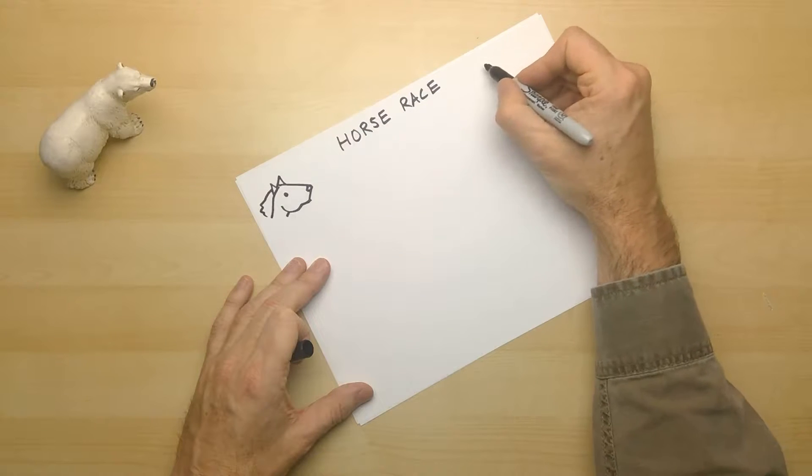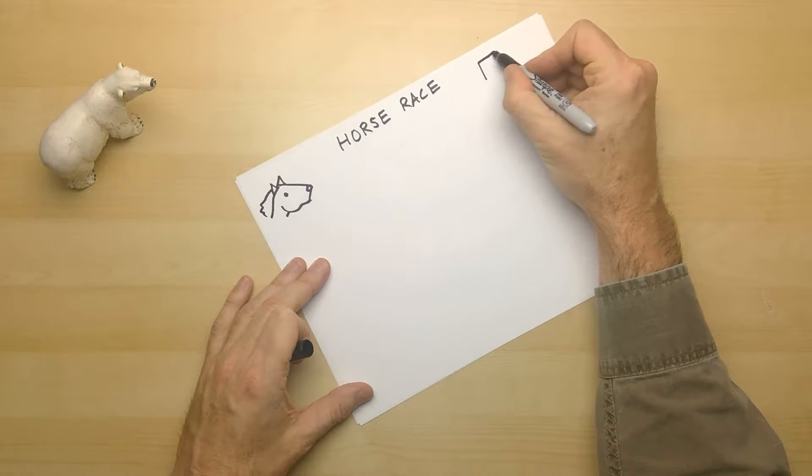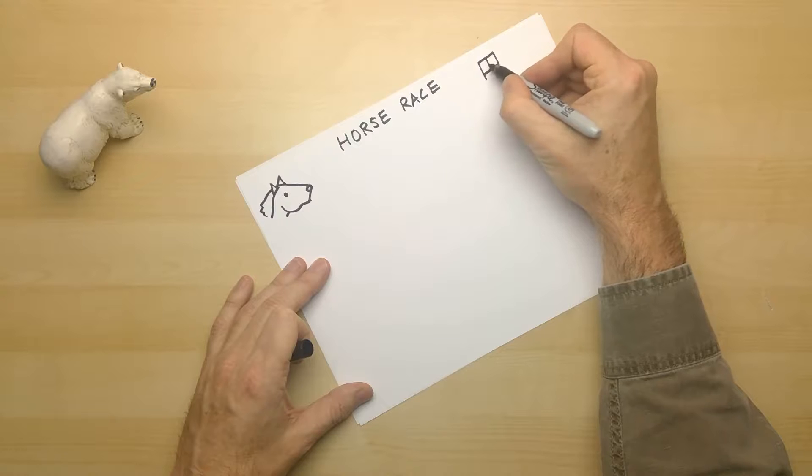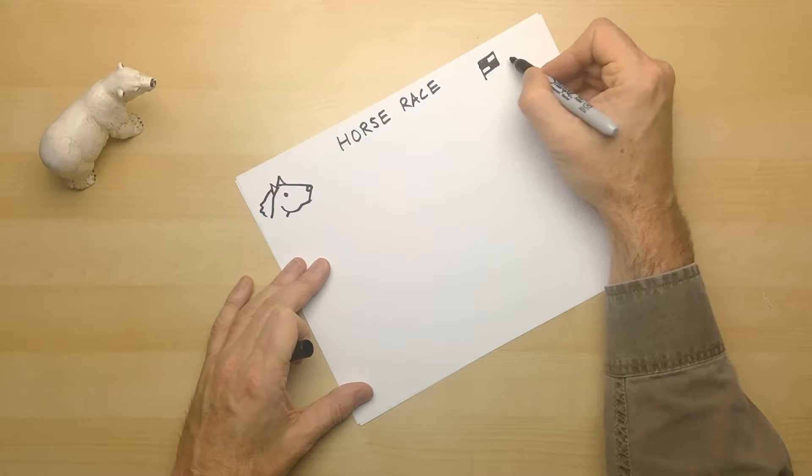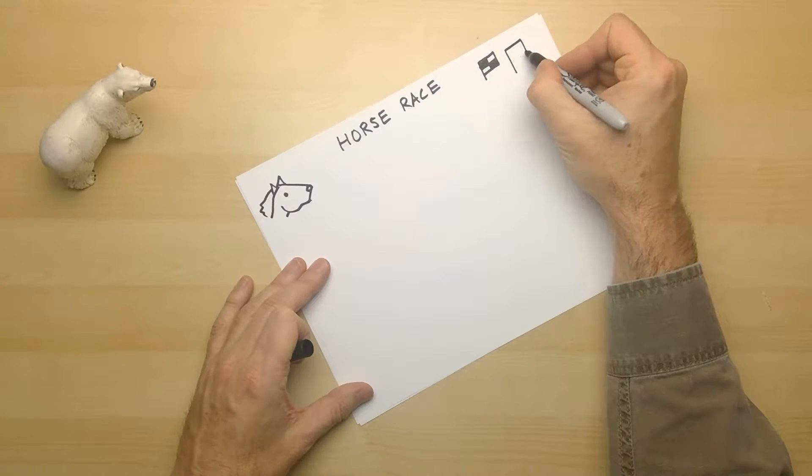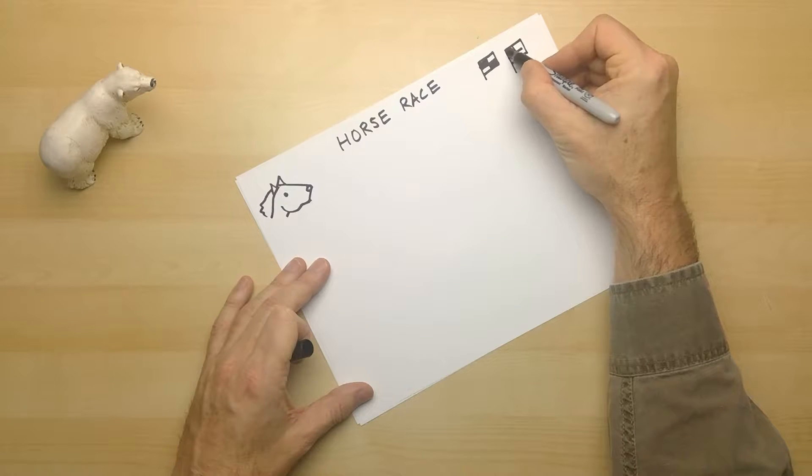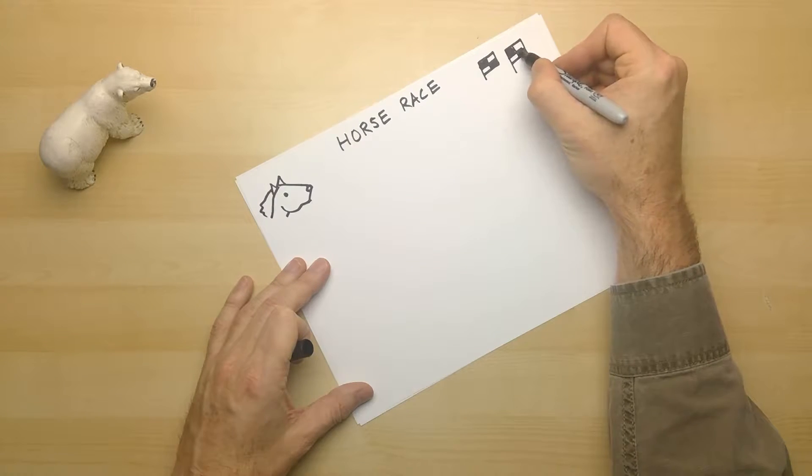And over here, let's draw just a rectangle like this. And this looks like a race flag, a checkered flag. I'm gonna make two of them. Good.